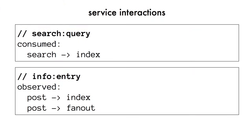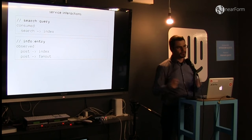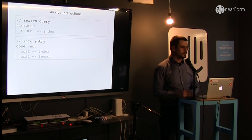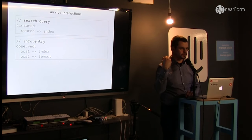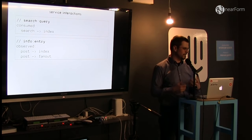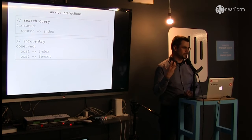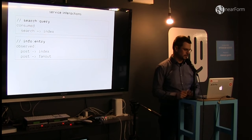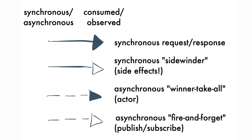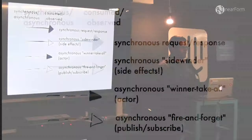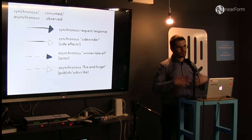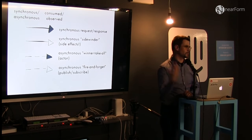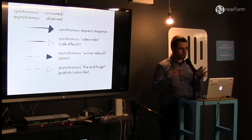You can look at it from the perspective of service interactions — the search query message goes from the search service to the indexing service which consumes it. The 'info entry' message is observed by both the indexing service and the fan-out service that injects it into the timeline. If you think about interactions between microservices, you can categorize them: some are synchronous, some are asynchronous; some are observed, some are consumed. If it's pub-sub, it's asynchronous and you just observe the messages. But if you're storing data, that's synchronous and you're consuming the message — you don't want some other database to store the data.